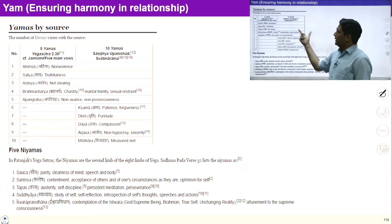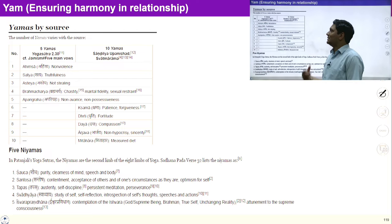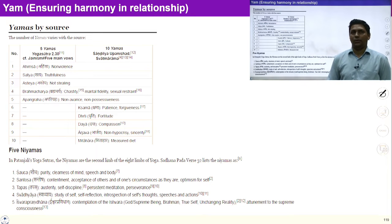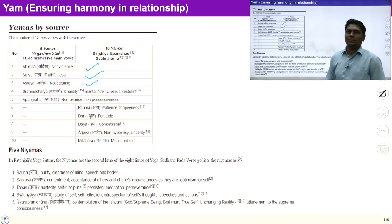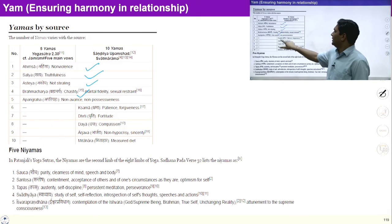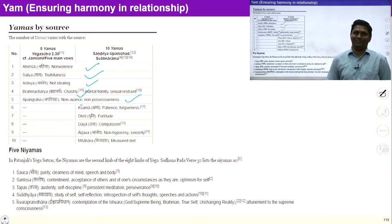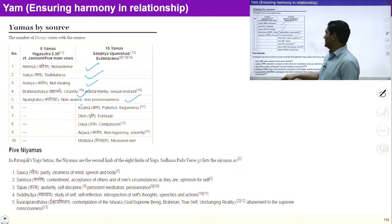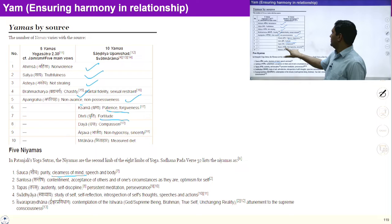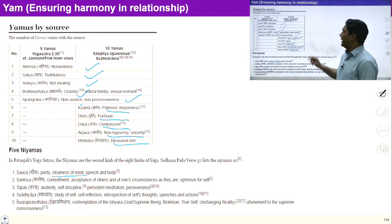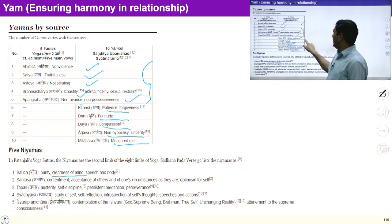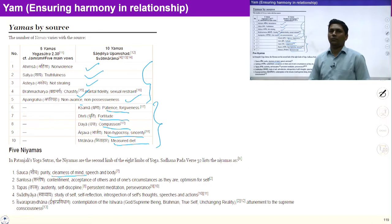All these yam and niyam we are going to study in this session. The five yams are: non-violence, truthfulness, non-stealing, chastity, and non-possessiveness. Along with these we will discuss five more principles: purity, patience, fortitude, compassion, non-hypocrisy, and measured diet — ten principles in total under the head of yam.